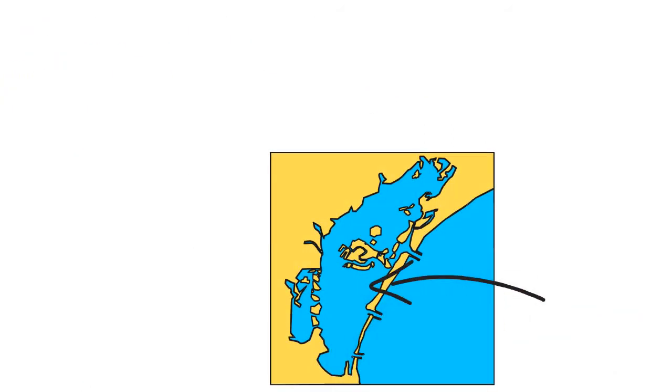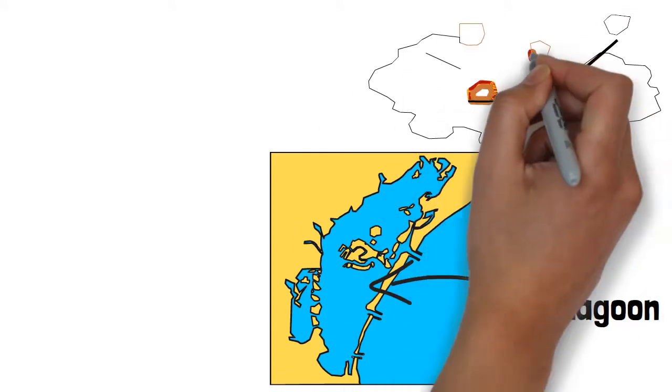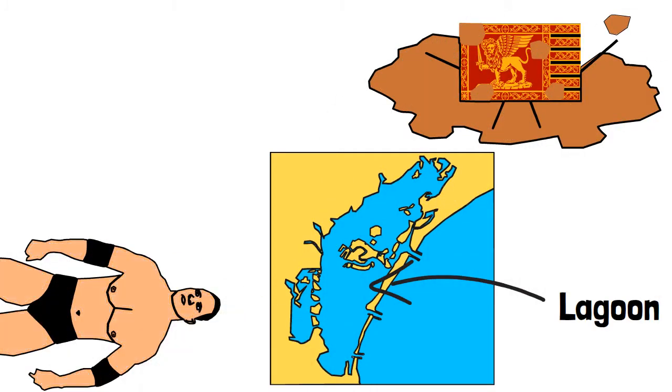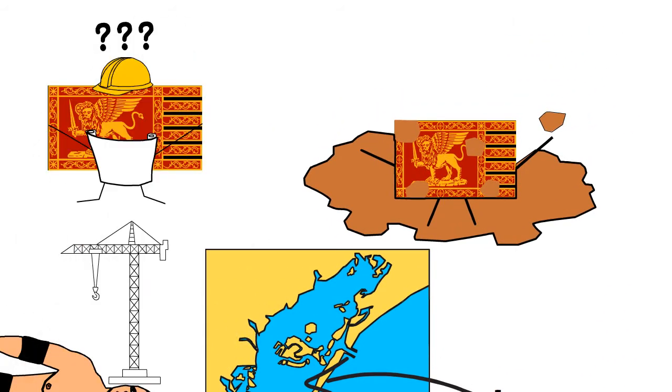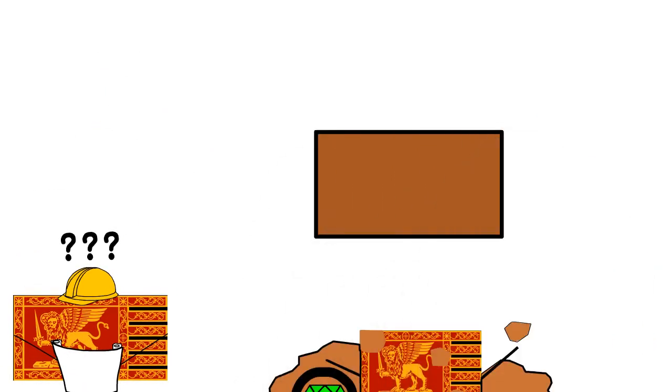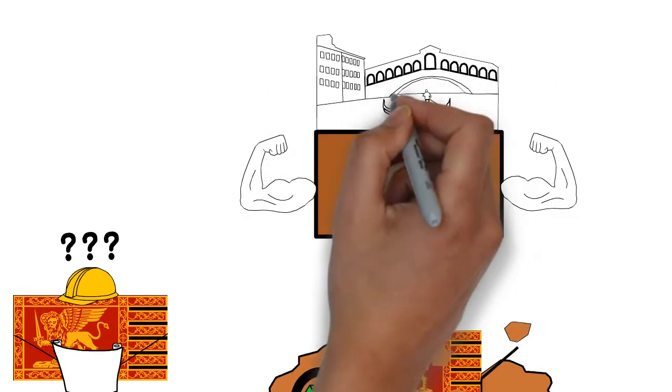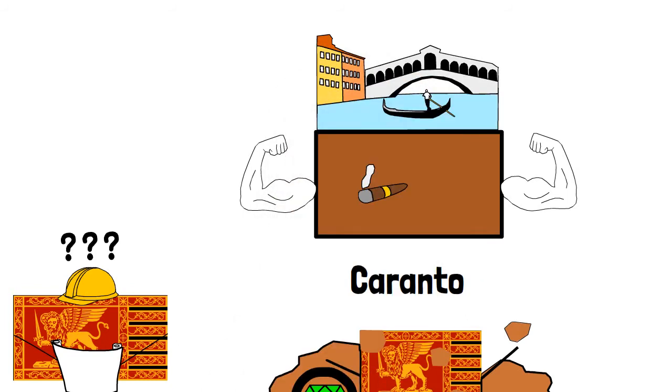With Venice being situated within a lagoon, the ground conditions consisted of mud and only mud, with no rock to construct on, making building on the soil less than ideal. However, lurking within all that mud was a hidden gem. This consisted of a layer of hard mud called the Caranto, which had the strength to support the weight of the buildings that were to be constructed above.